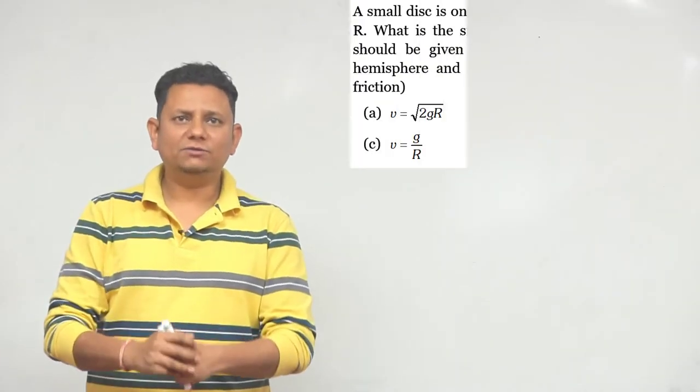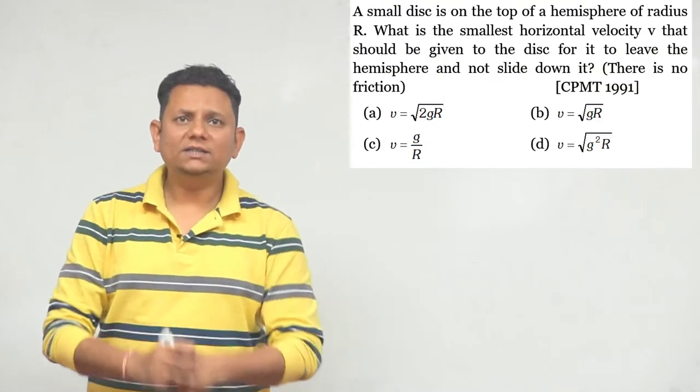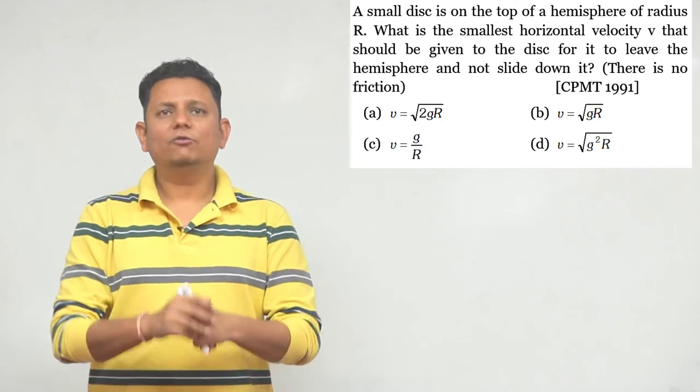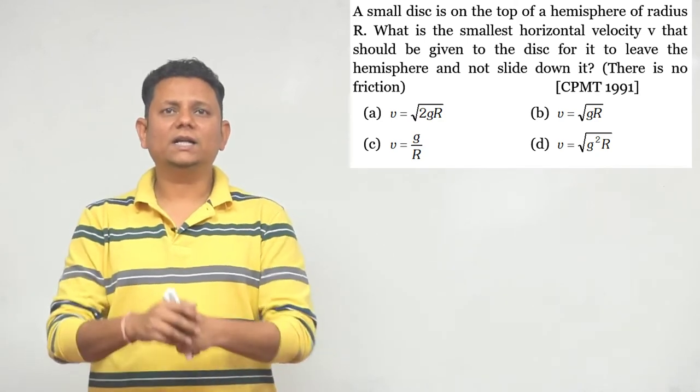Next question: A small disk is on the top of a hemisphere of radius R. What is the smallest horizontal velocity that should be given to the disk for it to leave the hemisphere and not slide down on it?